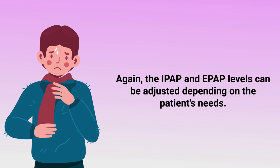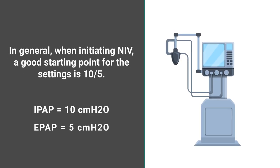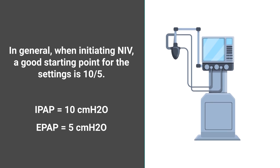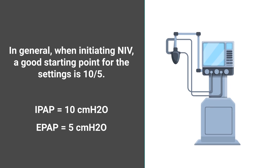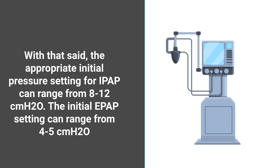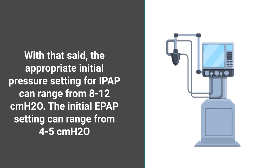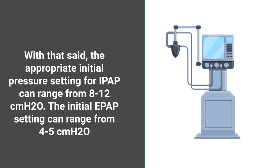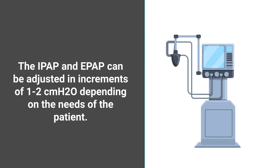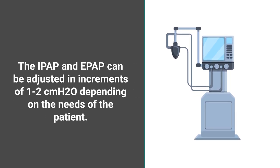In general, when initiating non-invasive ventilation, a good starting point for the settings is 10 over 5, with 10 being the IPAP setting and 5 being the EPAP setting. The appropriate initial pressure setting for IPAP can range from 8 to 12 centimeters of water pressure. The initial EPAP setting can range from 4 to 5 centimeters of water pressure.